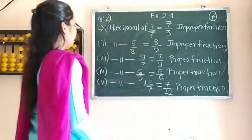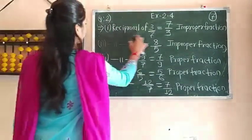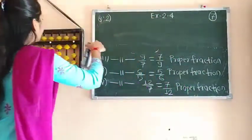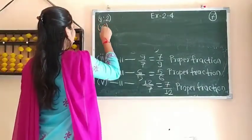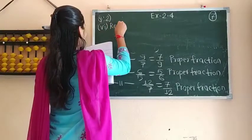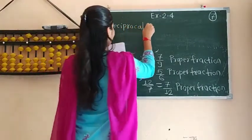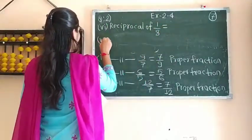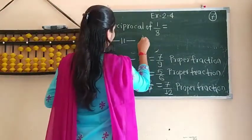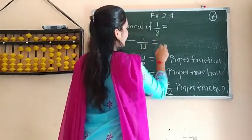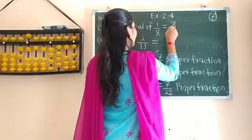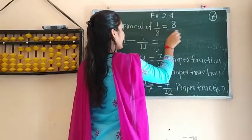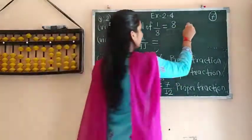Two more examples remain. The reciprocal of 1 by 8 — so its reciprocal is 8 upon 1. If there is 1 at the denominator place, just write 8. So it is a whole number.